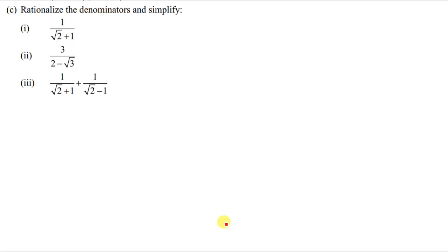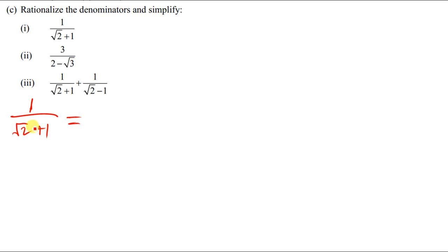Alright, so let's quickly do the rationalizing. The first question is 1 over the root of 2 plus 1. When you've been told to rationalize this, you have to find something called the conjugate — the conjugate of the denominator.